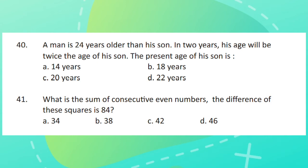Question 41. What is the sum of consecutive even numbers? The difference of these squares is 84.